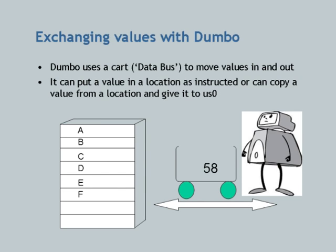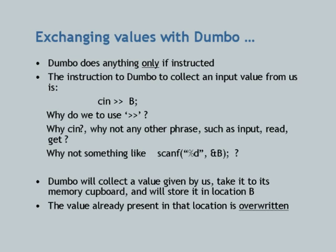How do we exchange values with Dumbo? Technically there is a data bus inside a computer, but in our caricature Dumbo has a cart to wheel values to and fro. The instruction for input is written as 'cin >> B'. Why do we use greater-greater? Why say 'cin'? Why not 'input', 'read', or 'scanf("%d", &b)'? That is because it's a convention of the language, and since the rest of the world agrees with that convention, we follow it.